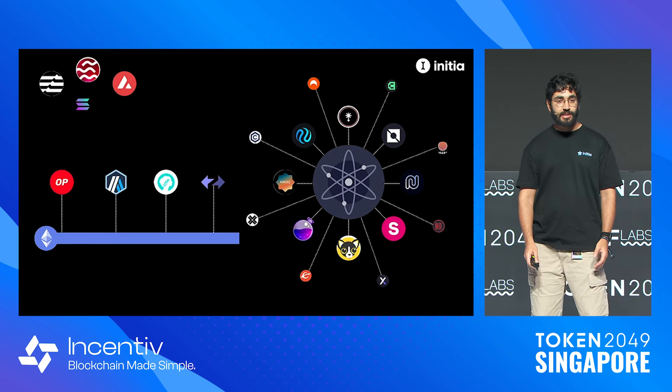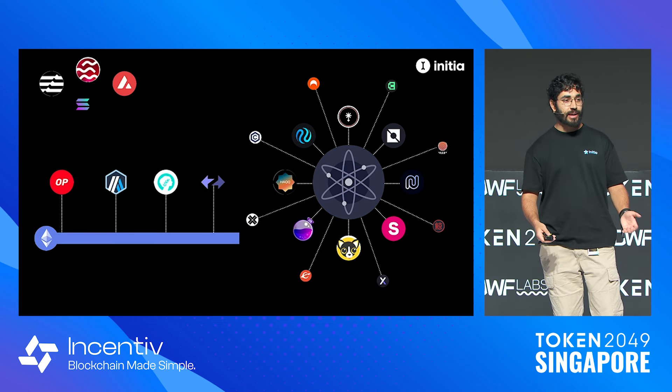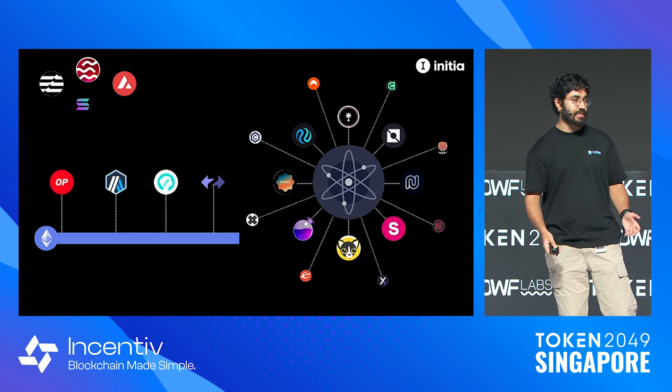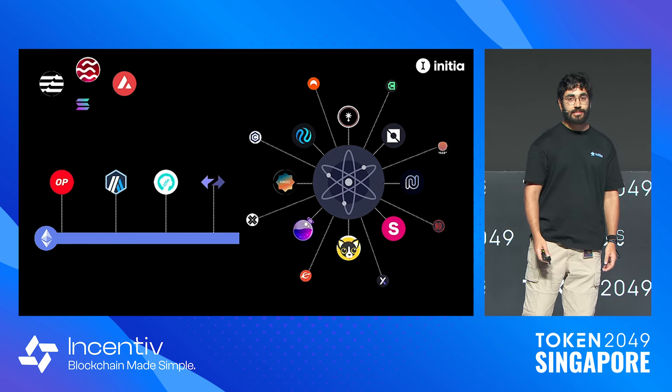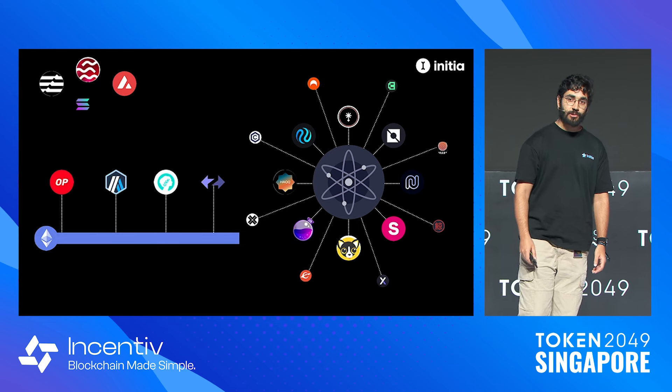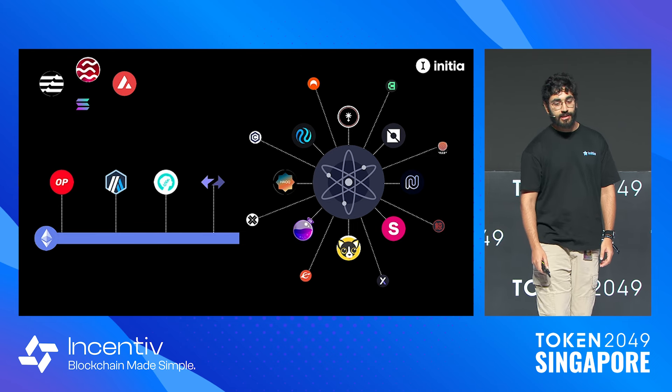And then you had some people try different ideas for how to reach scale — things like Sei, Aptos, and Solana.